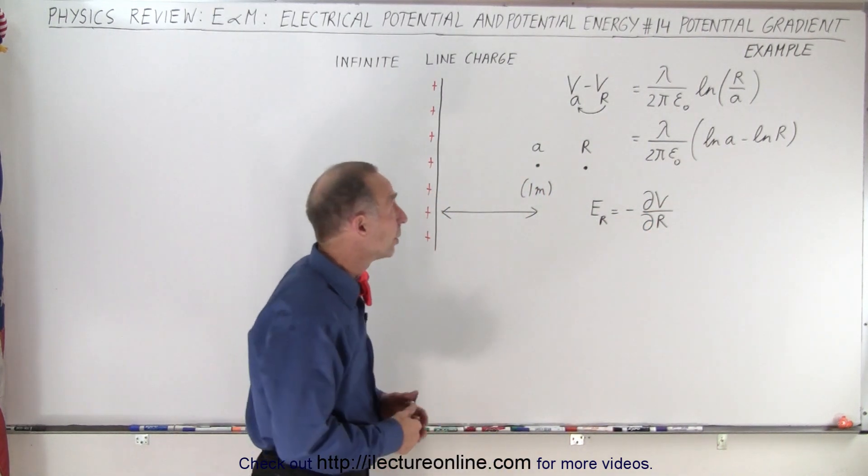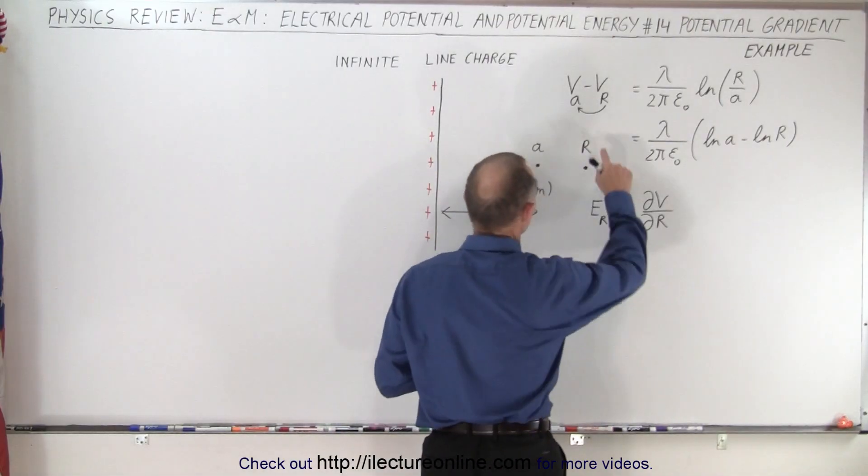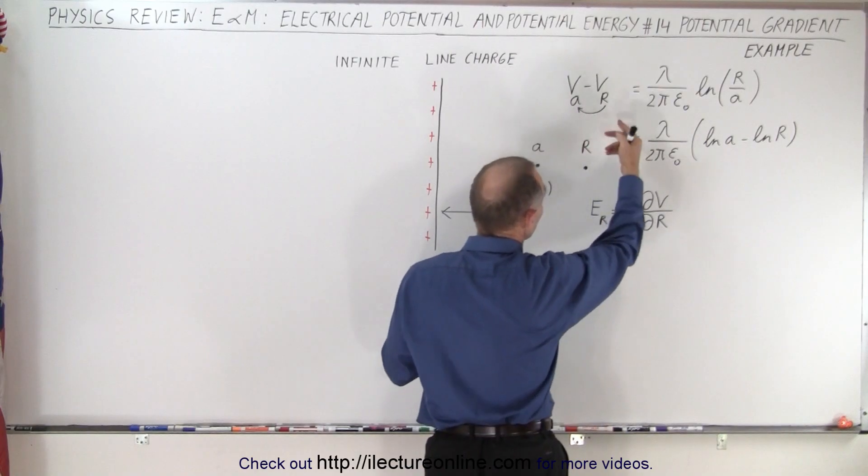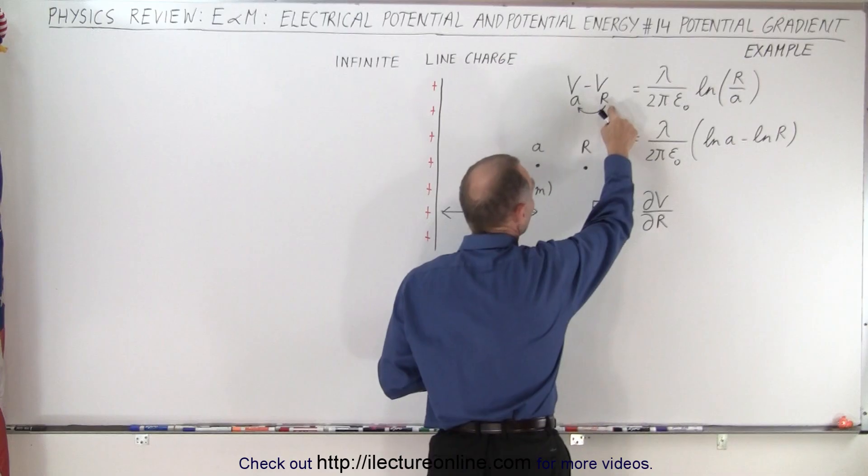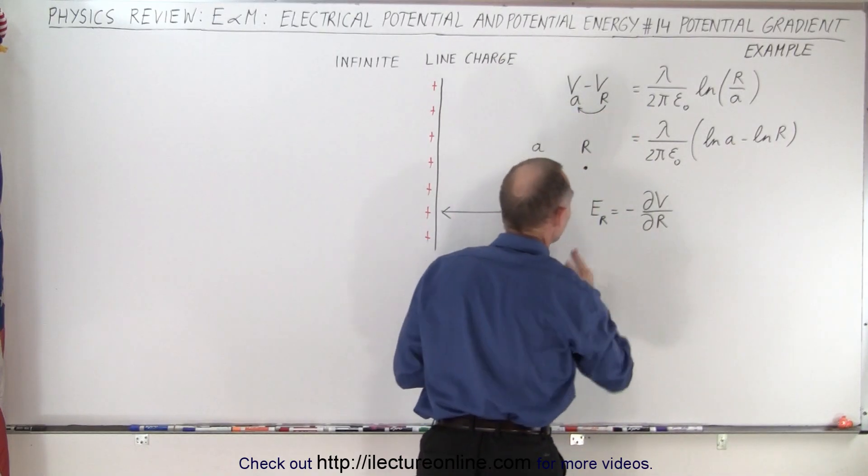Now where did the potential come from? Well, we use this equation right here where we go VA minus VR, which means you go from R, you move to A, and then you take that voltage difference.